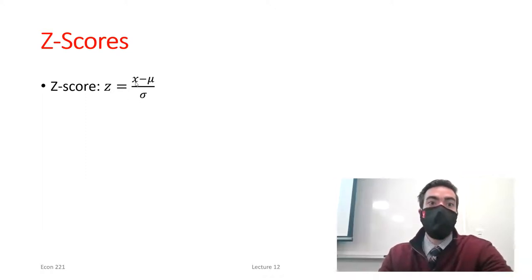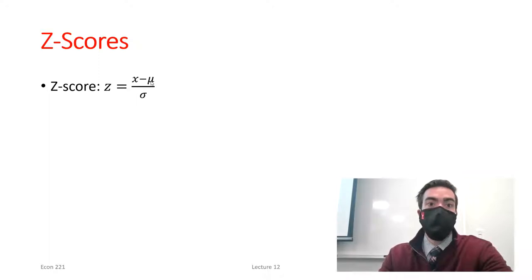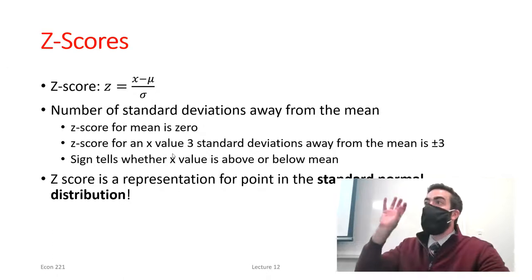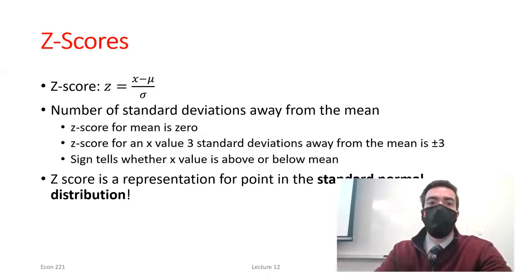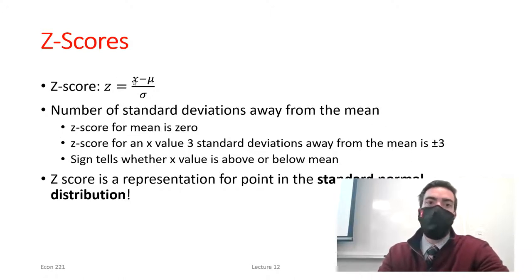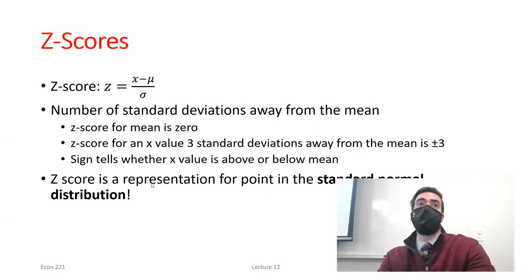Here was our equation for getting the z-score. If x is above the mean, we get a positive z-score; if x is below the mean, we get a negative z-score. So the sign tells us whether the value is above or below the mean. The z-score represents the number of standard deviations away from the mean. The mean always has a z-score of zero. Once we convert x into a z-score, we can use the standard normal distribution tables. We'll work through a few examples to see how this is done.